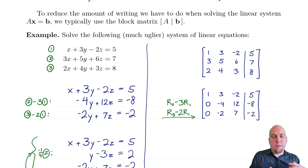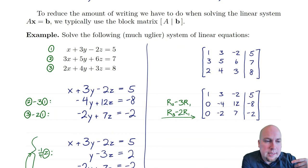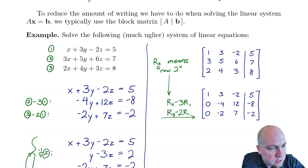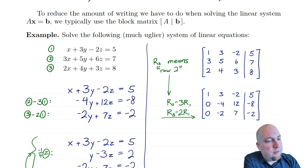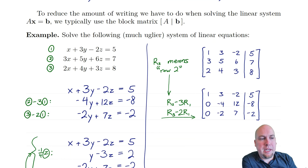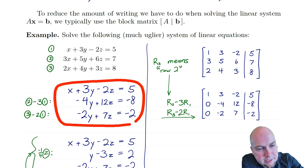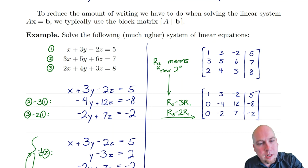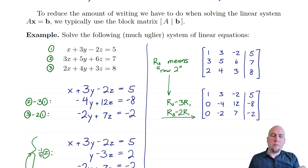The way I solve the linear system when represented as an augmented matrix is I do exactly the same operations as before, except to rows of the matrix instead of to equations. This saves me the hassle of writing down the variable names every time — they're implied by the augmented matrix form. So for example, equation 2 minus triple equation 1 just corresponds to row 2 minus 3 times row 1, written as R2 minus 3R1. The x's, y's, and z's are suppressed, making it quicker to write.